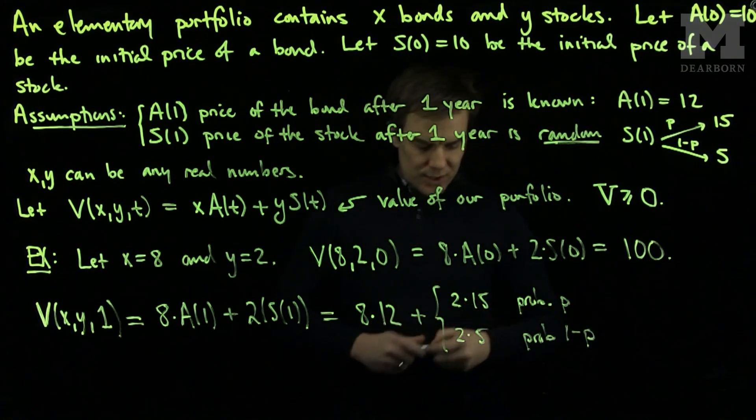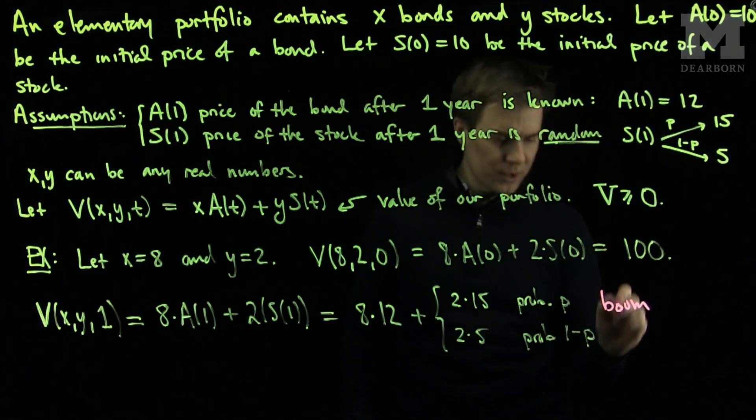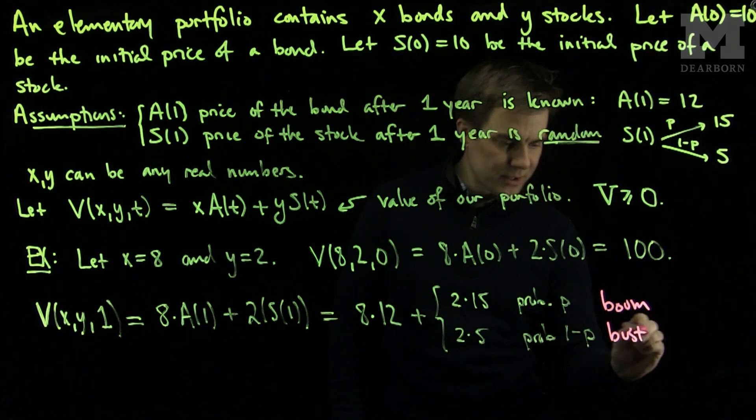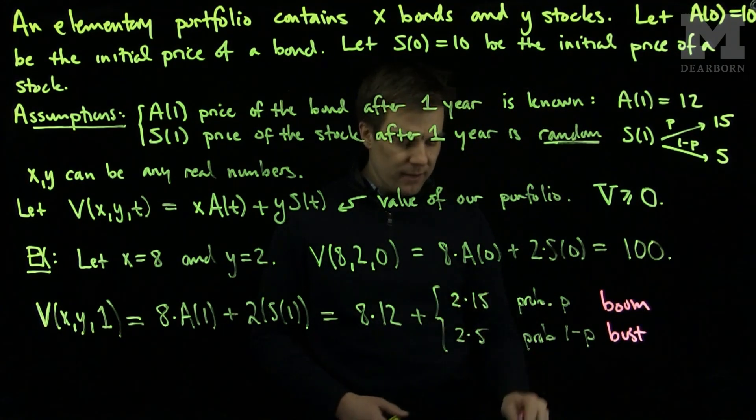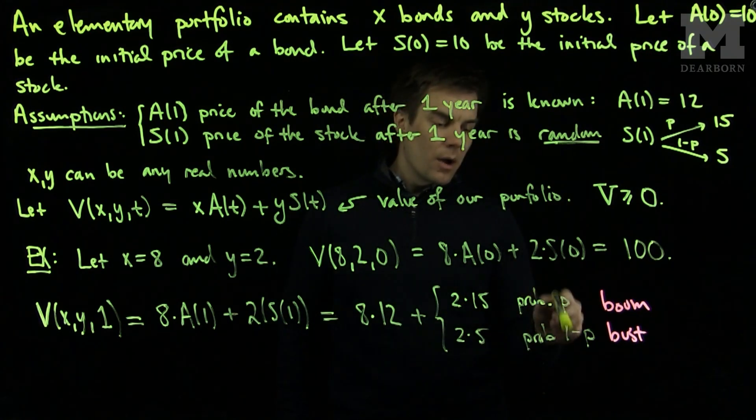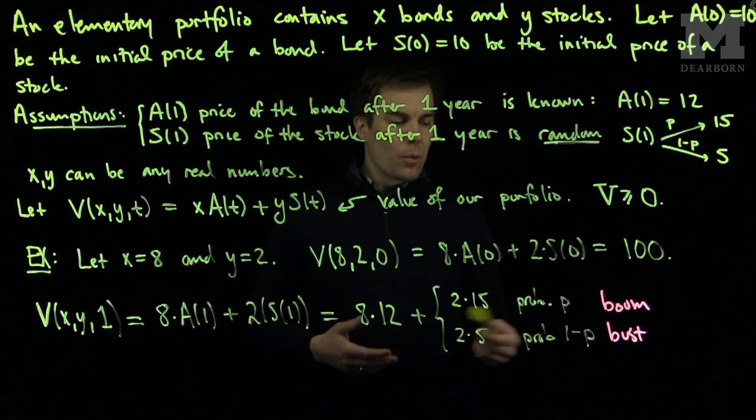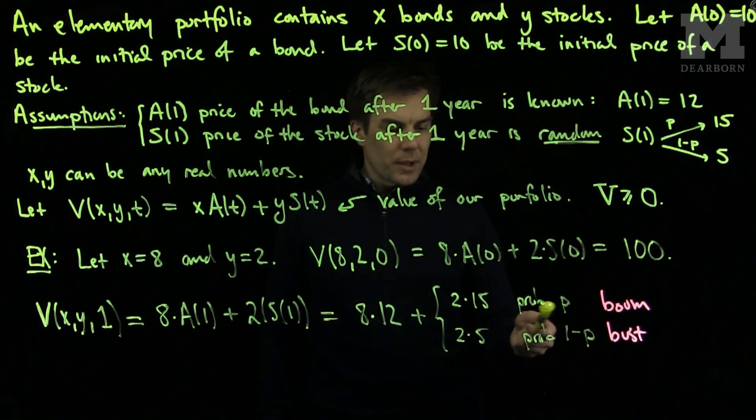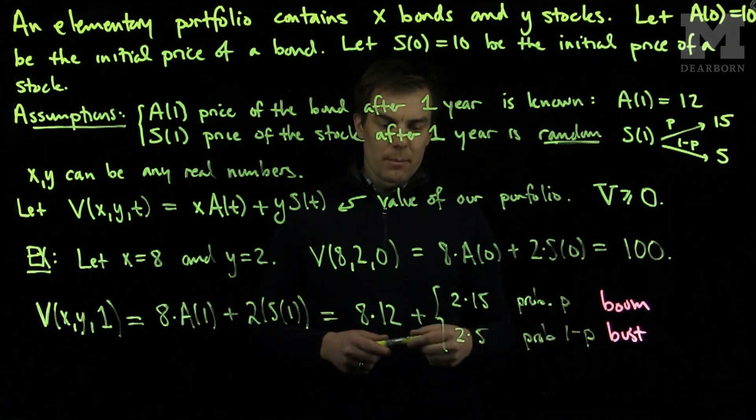And so we think of this situation when the stock price goes up as the boom scenario, and we think of this as the bust scenario. So I will lose 50% in this scenario, and I will gain 50% in this scenario. Now, the value of P can be chosen in the particular context of the problem, but we'll see that the larger P is, the more likely a boom is, and the smaller P is, the less likely a boom is.